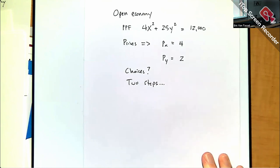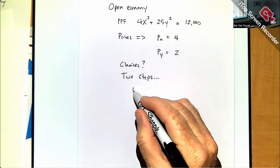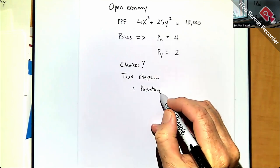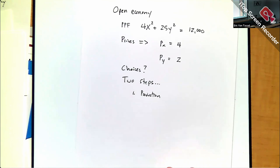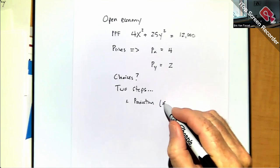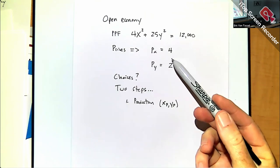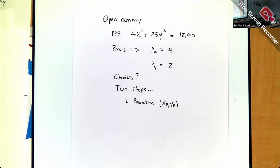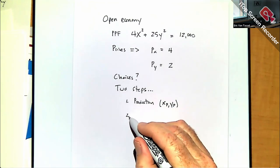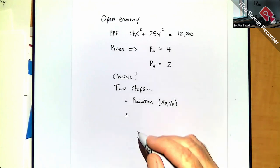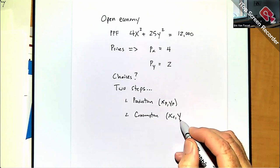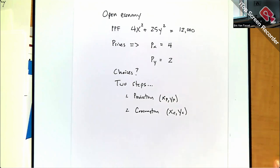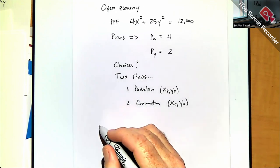There are two separate steps. First, analyze the production decision — we can keep production and consumption entirely separate. Under production, we figure out what quantities of X and Y to produce in order to sell at international prices and make as much money as possible.